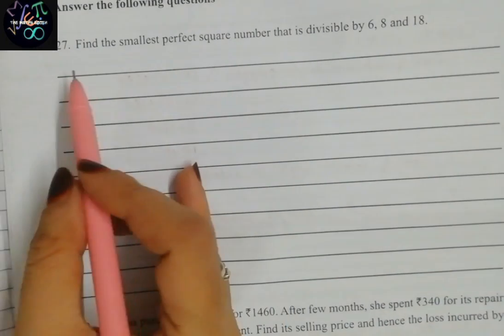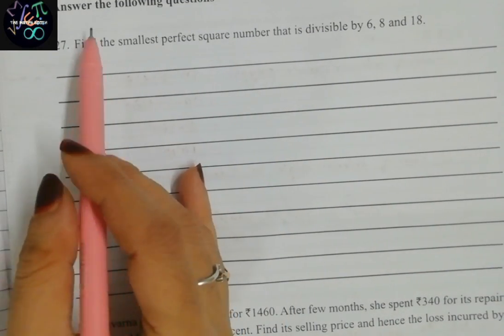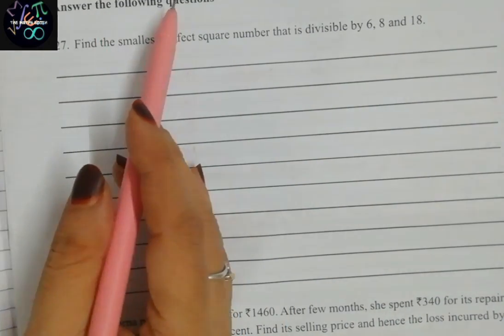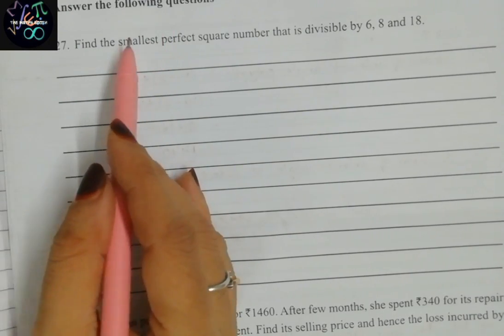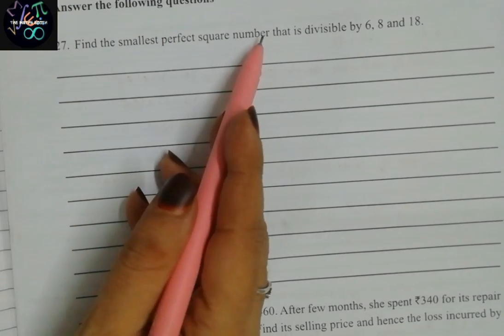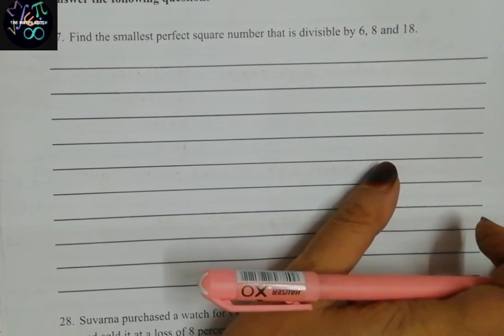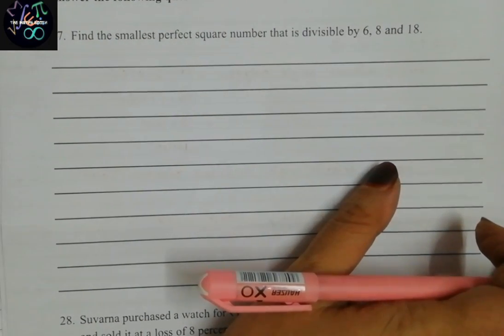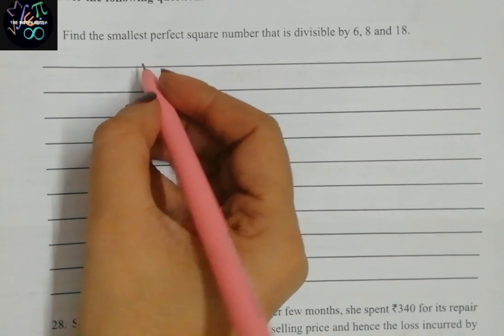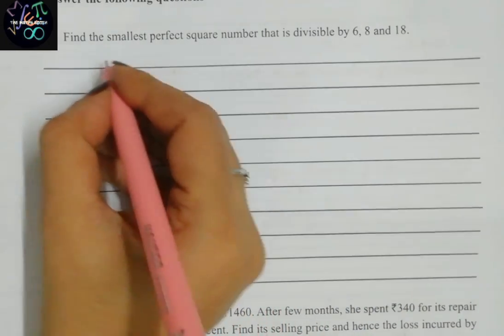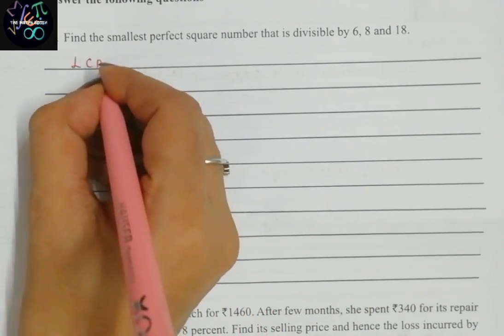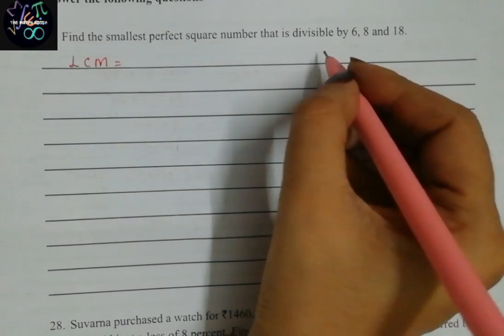Let us see the next question. Question number 27 from the fourth main section: answer the following. Find the smallest perfect square number that is divisible by 6, 8, and 18. We have to find the smallest perfect square number. Let us see. That is nothing but the LCM of these 3 numbers. How we will do LCM?